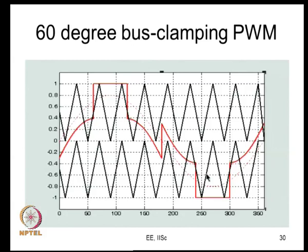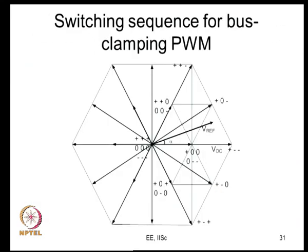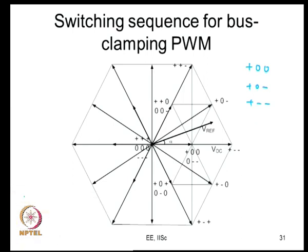For 60-degree bus clamp PWM you compare with two level-shifted high-frequency carriers, and you will see that the R phase is clamped in certain regions, and similarly Y and B phases will be clamped in their corresponding regions. Every possibility that existed in the two-level case also exists here, and more possibilities exist in the three-level inverter. Using bus clamping in the three-level case results in the same kind of sequences, where for a given region the sequence starts with plus-0-0, goes to plus-0-minus, plus-minus-minus, then 0-minus-minus.